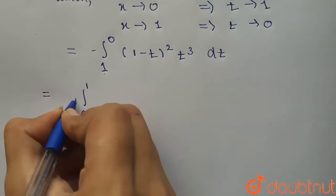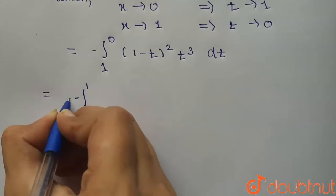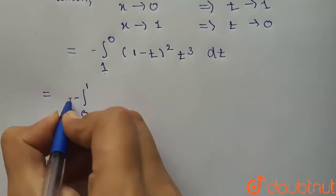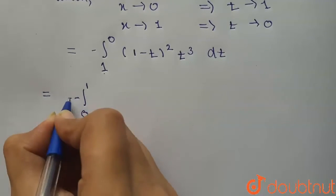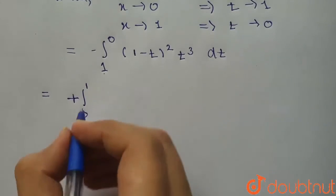From that property, changing limits from 1 to 0 to 0 to 1 gives a negative. Combined with the negative from dx, the negatives cancel and this becomes positive. So 0 to 1.